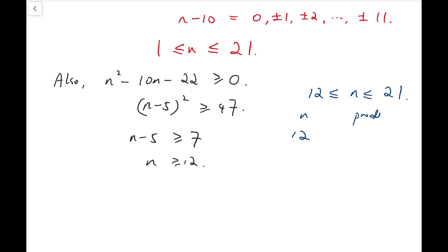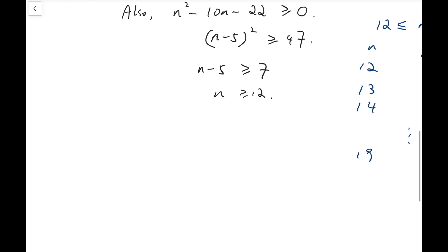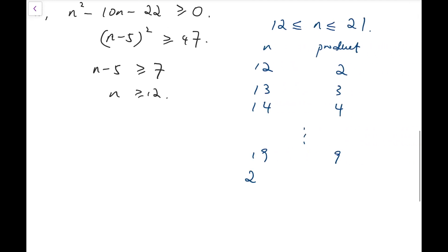If the number is 12, then the product is 2. And we can do the same, all the way up to 19. And then if n is 20, the product is 0. If n is 21, the product is 2 again.